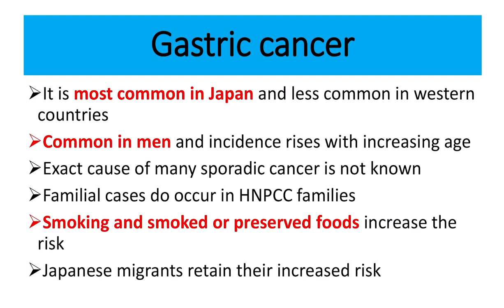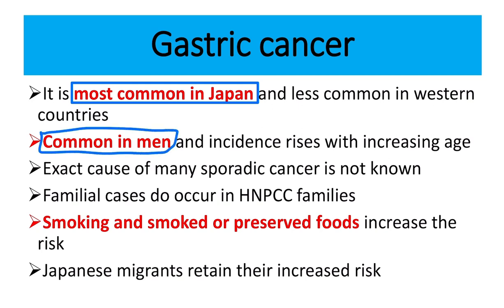Gastric cancer is most common in Japan and less common in western countries. It is more commonly affected in men. The second point: it is more common in men and with increasing age. The exact cause of gastric cancer is not known, but familial causes are seen in HNPCC families.